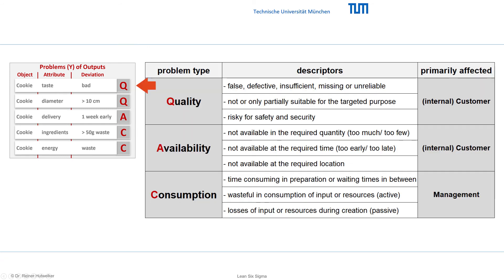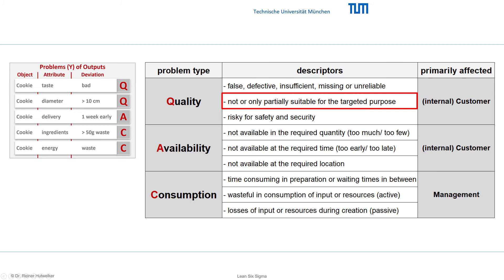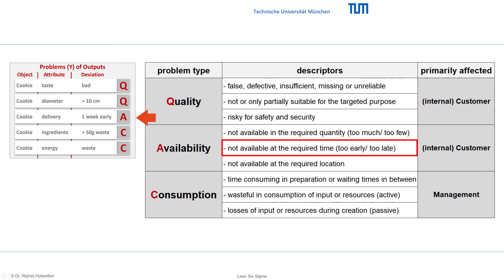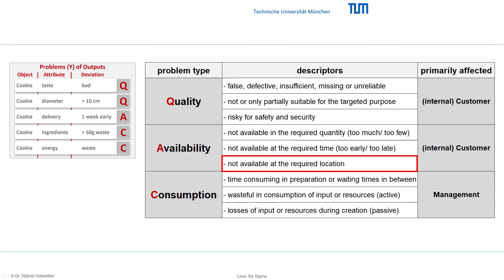Among the quality problems are the bad taste and the too-large diameter of the cookies, as these variations are captured by the assessment: false, defective, insufficient, missing, or unreliable. A different quality problem exists if the output is not, or only partially, suitable for the targeted purpose — a type of deviation that usually results not from creation but from incorrect design during development. Another important type of quality deviation is a risk to safety and security attributes. The premature delivery of our cookies indicates an availability problem, because the output is not available at the requested time. An availability problem would also exist if too few cookies were delivered at the desired time, or if the right amount were available at the right time but in the wrong location.